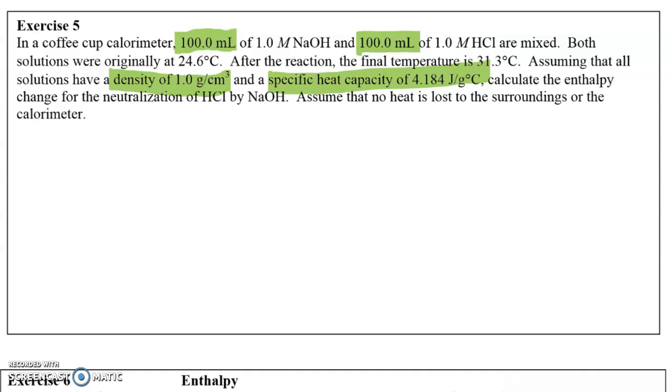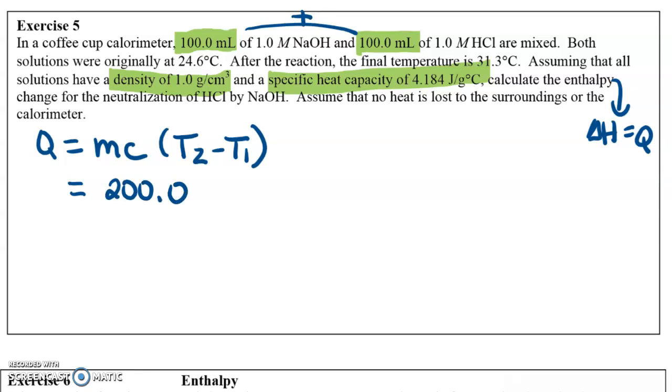It is asking us to calculate our enthalpy change, but since there is no pressure change, we're going to say that our enthalpy is going to be the same as our Q value. So we can go ahead and use our Q equals MC delta T formula. I'm going to go ahead and write that out as T2 minus T1. The main thing to be careful of here is since we're mixing these two solutions together, our total mixture is going to be 200 milliliters, which means it's going to be 200 grams. We'll be using the specific heat of water, so 4.184. And if we're doing our temperature change, our final temperature is 31.3 degrees Celsius, and our initial temperature was 24.6 degrees Celsius.